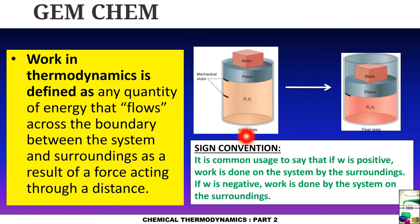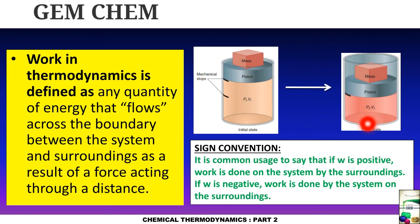Consider a piston with gas at initial state P1, V1. If we add more mass, the piston goes down and the final state becomes Pf, Vf — a change in both volume and pressure resulting in work, which is a flow of energy. The sign convention for work: W is positive when work is done on the system by the surroundings, and W is negative when the system does work on the surroundings. These sign conventions for work and heat are important throughout the thermodynamics chapter.